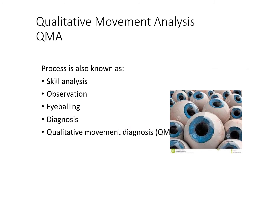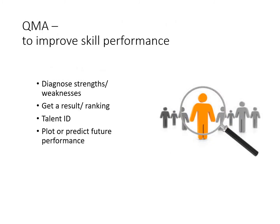The QMA — qualitative movement analysis — might be called something else in your SAC task or exam: skill analysis, observation, diagnosis, or qualitative movement diagnosis are all terms you may encounter. Don't be put off if you see different names; they all direct your attention to how we can describe the quality of a skilled performance.